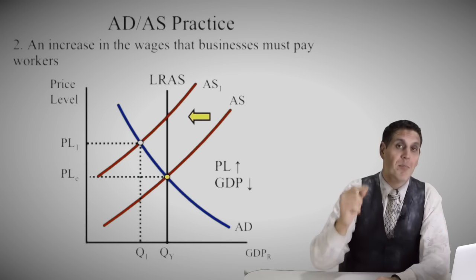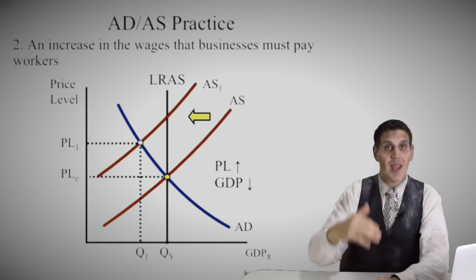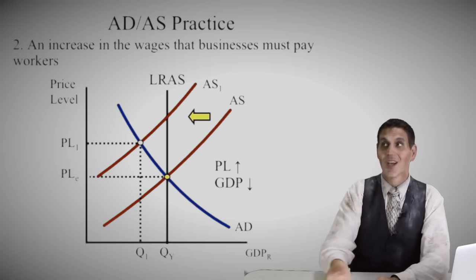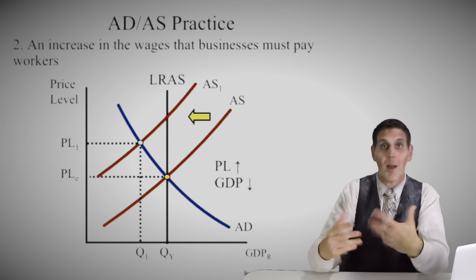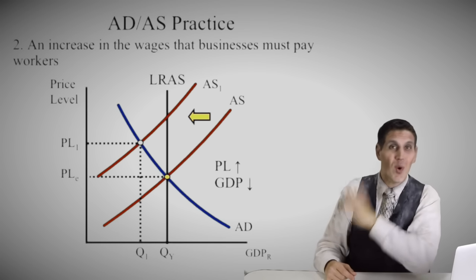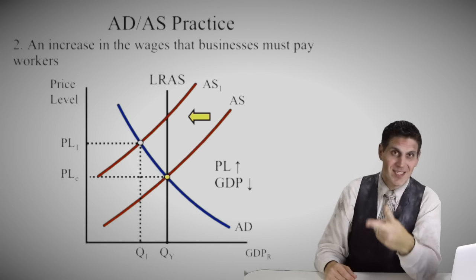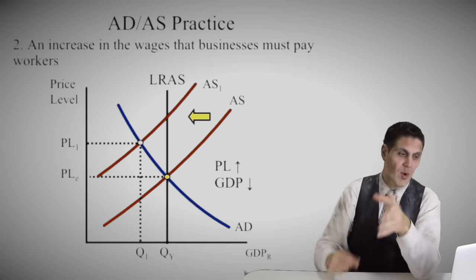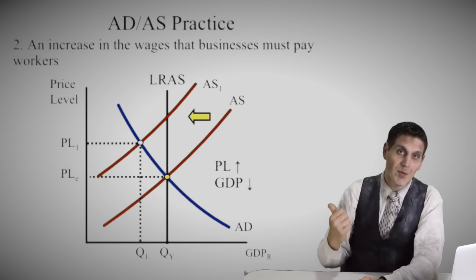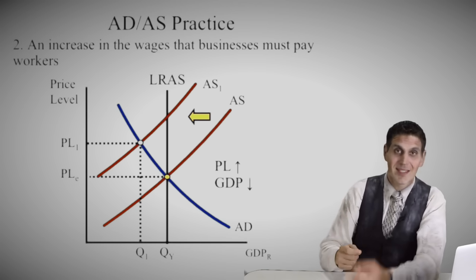Number two: an increase in the wages that businesses pay their workers. If you read this as an increase in income leading to more consumer spending, you're logically correct — but you're wrong on this question, because the wording tells you we're talking about the supply side. If there's an increase in wages that businesses have to pay their workers, supply would shift to the left, price level would go up, and GDP would go down — that's the idea of stagflation.